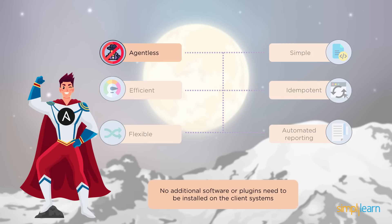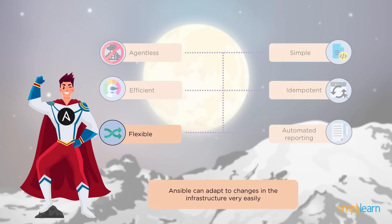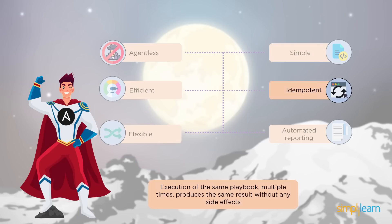Agentless — as already mentioned, you require no supporting software or plugin installed on your node or the client system. So the master has complete control, and this automatically means that Ansible is more efficient because now we have more space in our client and node systems for other resources and we can get Ansible up and running very quickly. Ansible is also flexible — an infrastructure is prone to change very often and Ansible takes no amount of time to adjust to these changes. Ansible cannot get any simpler with your playbooks written in YAML, which is as close to English as you can possibly get.